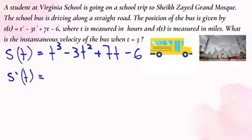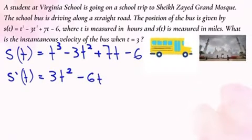The derivative of t³ is 3t², and the derivative of -3t² is -6t, and the derivative of +7t is +7, and the derivative of -6 is 0. Here we are going to apply the power rule.